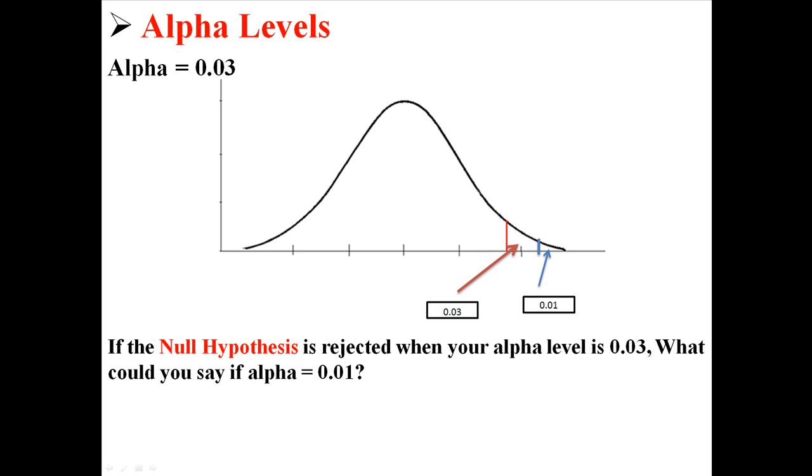But now back to the other question. If the null hypothesis is rejected when your alpha level is 0.03, what could you say if alpha was 0.01? Now, as you can see there, if you have a point to the right of 0.03, if you have a point to the right of the red line, it doesn't necessarily have to be to the right of the blue line as well.